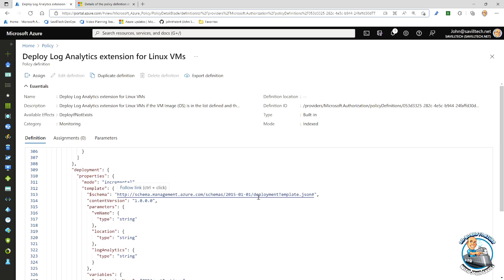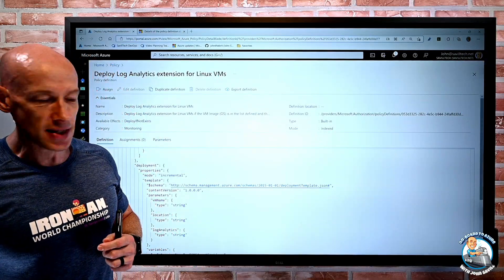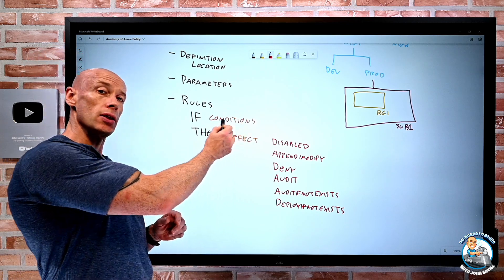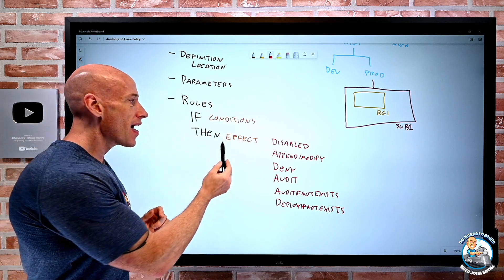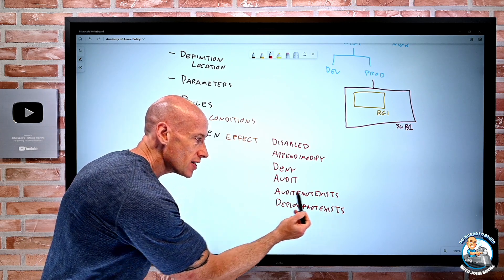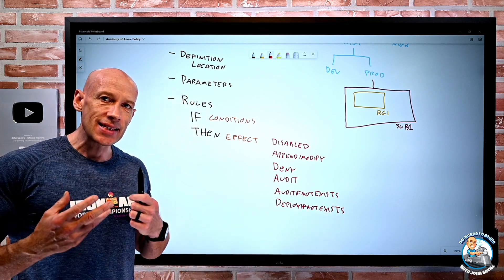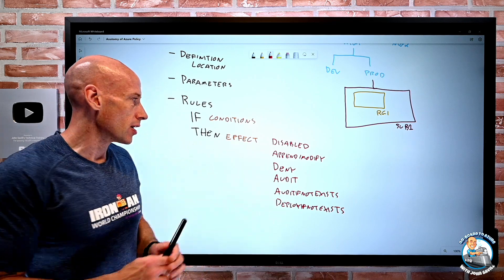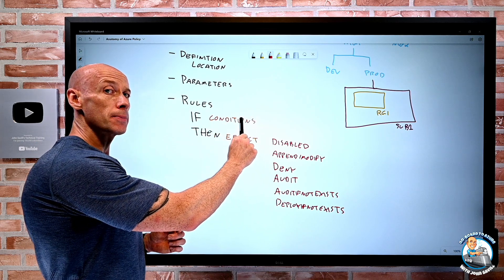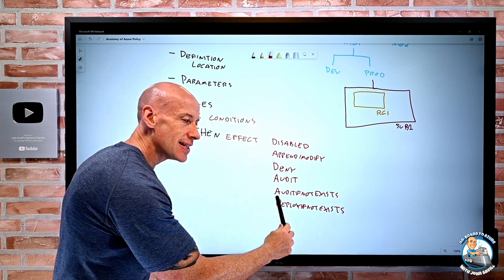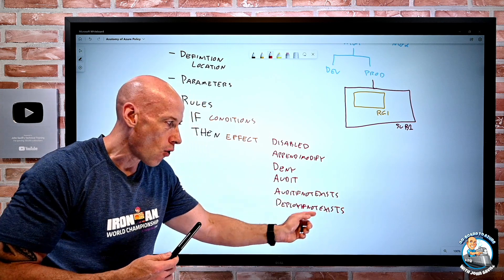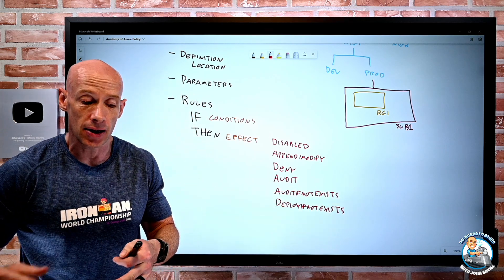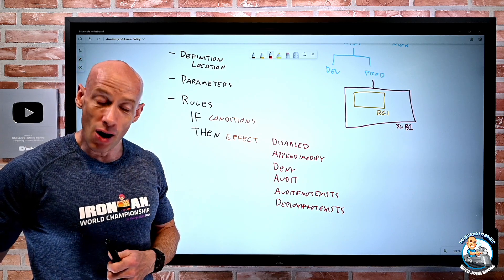So we can see some pretty rich things. The condition was just finding the right context — where do I want to match a Linux VM? And then the effect had its own set of existence conditions to decide if it should then perform the action. Find me the Linux VMs, check these existence conditions, and if they don't match, I'm going to audit or actually deploy this template to remediate — so there's some really powerful things we can do there.